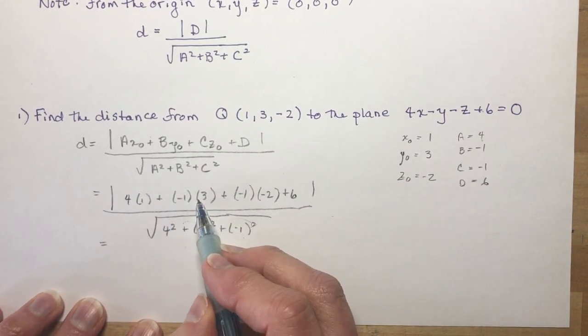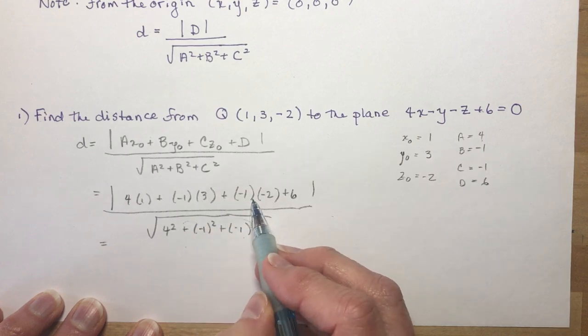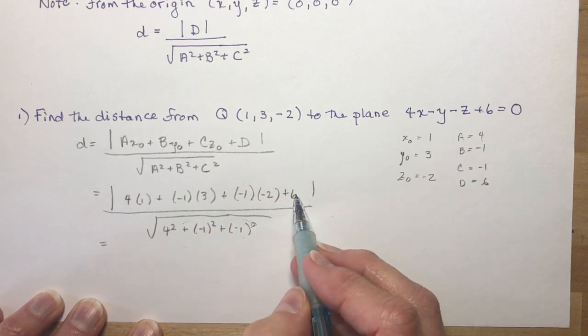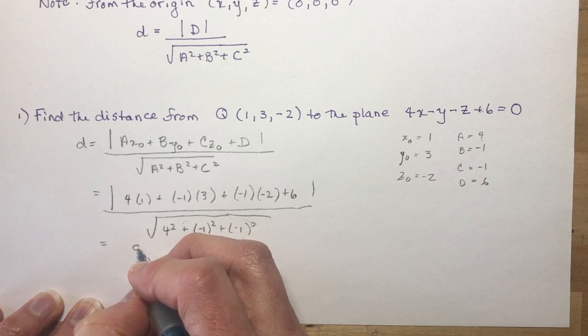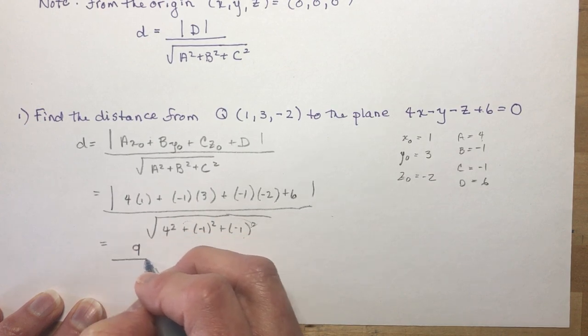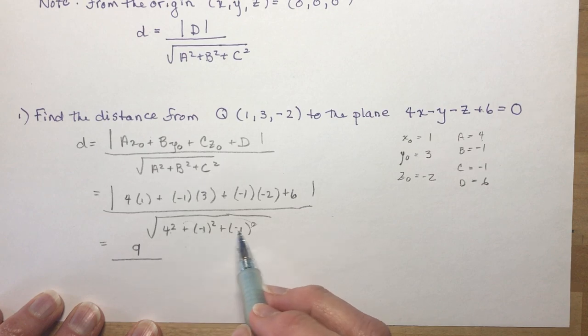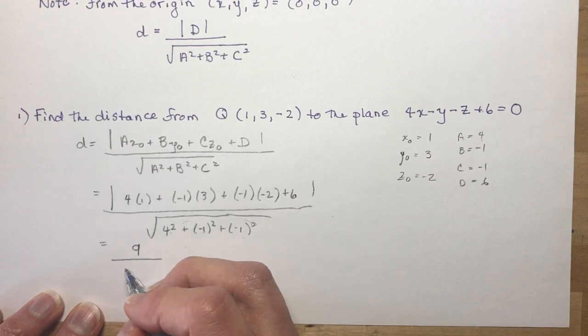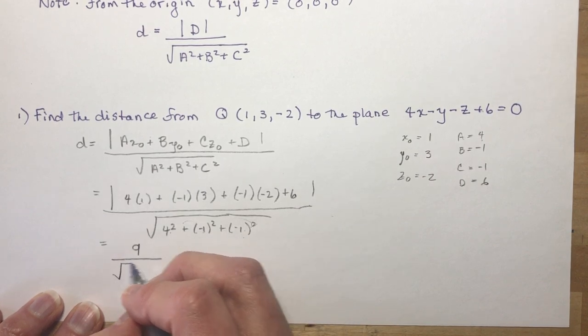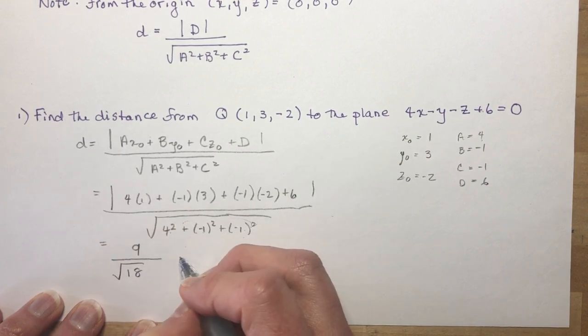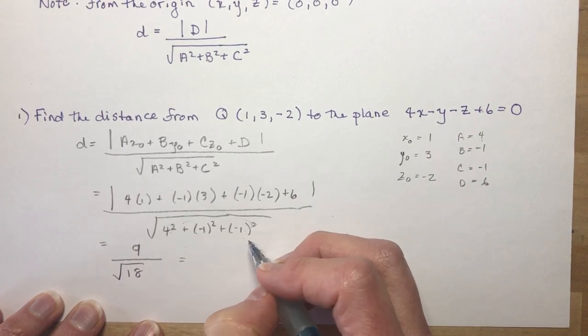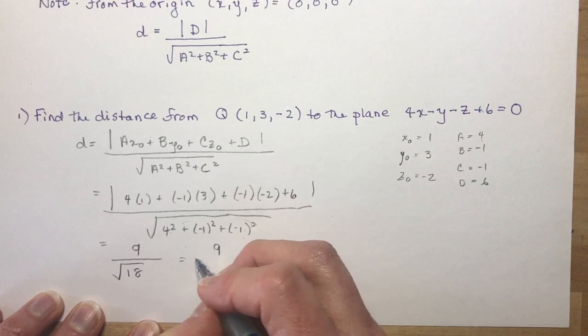And let's get all those numbers straight here. So I have 4 - 3, that's 1, plus 2 is 3, plus 6 is 9. So the absolute value of 9 is still 9. And in the denominator, I would have 16, 17, 18. So the square root of 18, you might want to write that out a little more pretty.